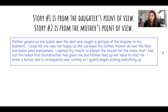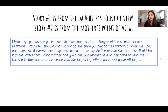The first story is from the daughter's point of view. 'Mother gasped as she pulled open the front door and caught a glimpse of the disaster in my bedroom. I could tell she was not happy as she surveyed my clothes thrown all over the floor and books piled everywhere. I opened my mouth to explain that I had lost the locket that grandmother had given me, but mother held up her hand to stop me. I knew a lecture and a consequence was coming, so I quietly began to pick everything up.'